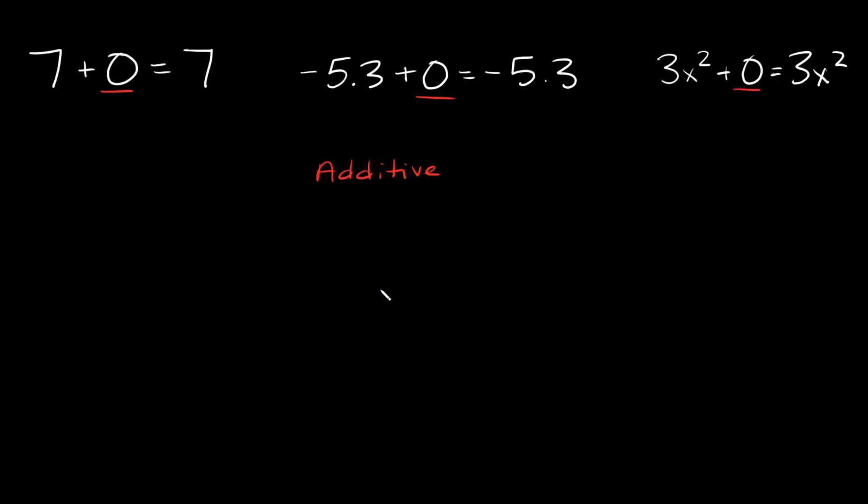Now let's jump into the identity property of multiplication. The identity property of multiplication just says when you multiply something by one, it doesn't change the value of that number. For example, if you had 23 times 1, your answer here would still just be 23, right?